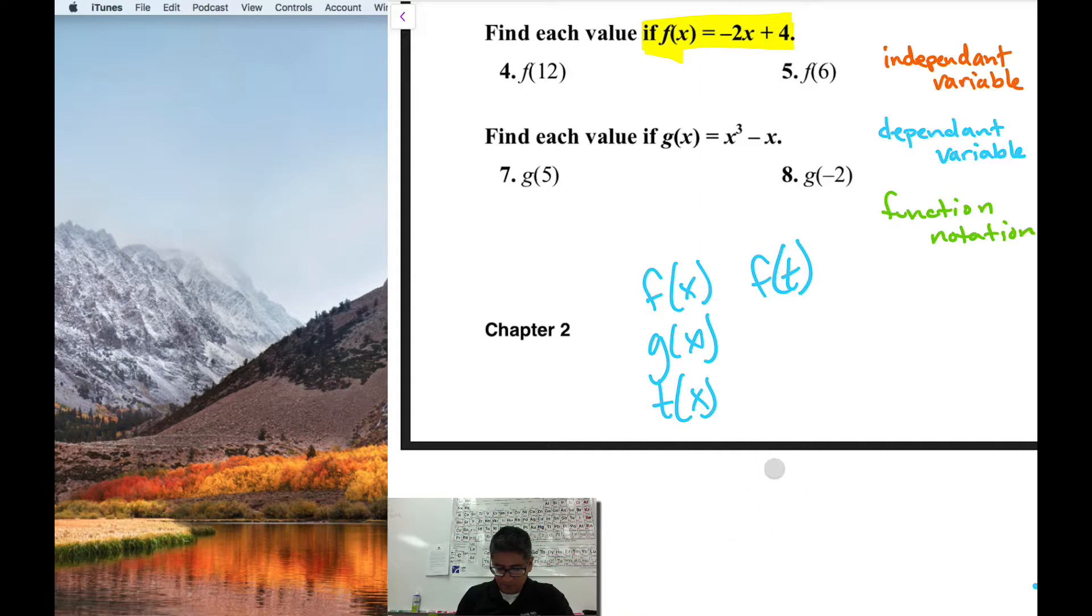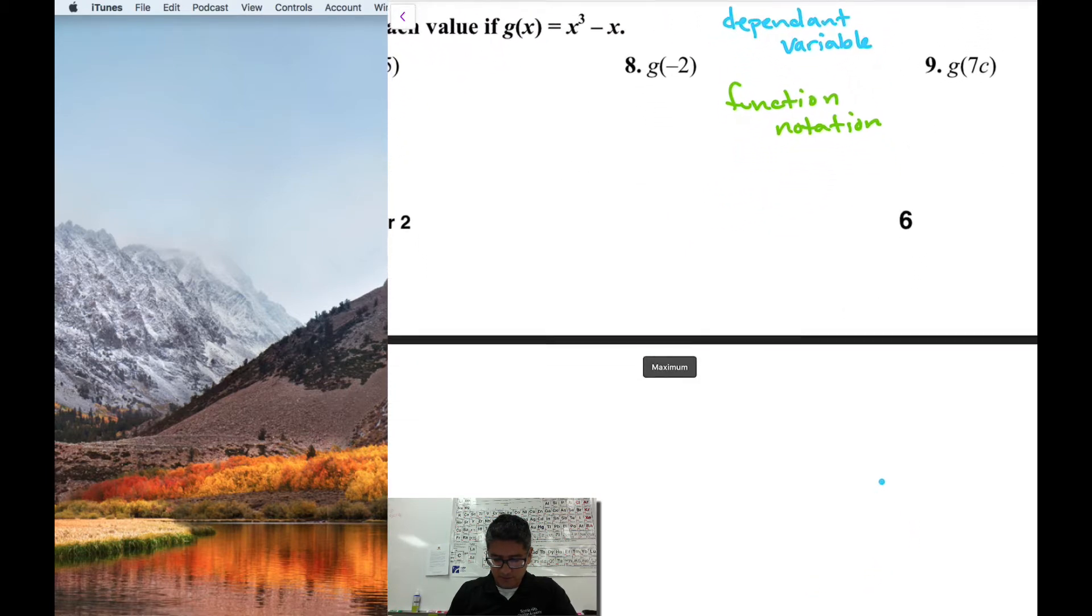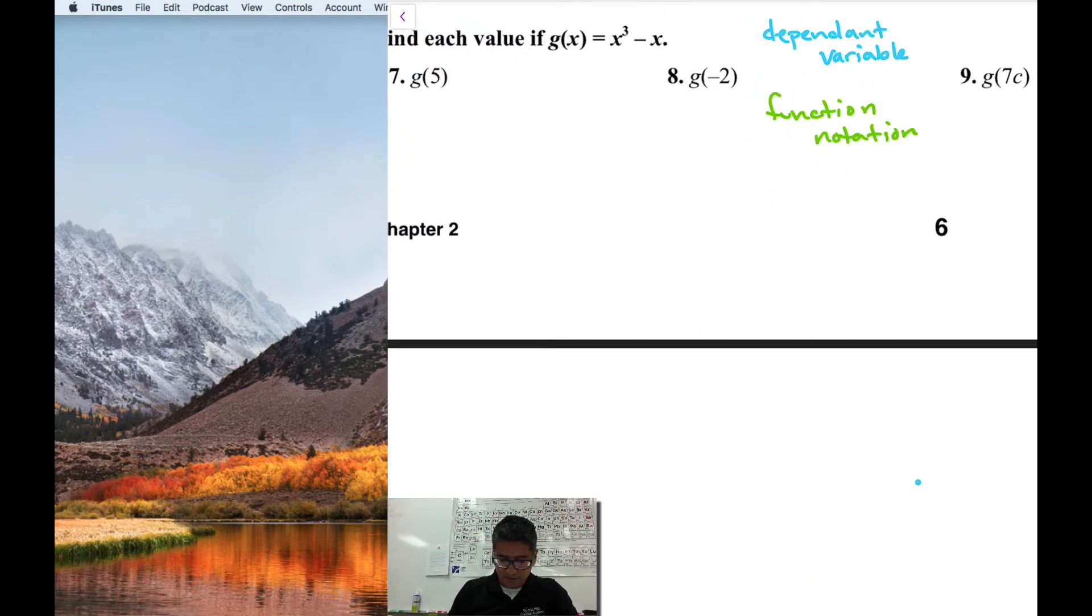This will be the last one that we work out. And then that should be enough for you to use in your homework. Let's work out number nine. That one looks pretty challenging. So number nine, I have, I'm going to rewrite my equation over here: g of x equals x cubed minus x. So g of 7c.